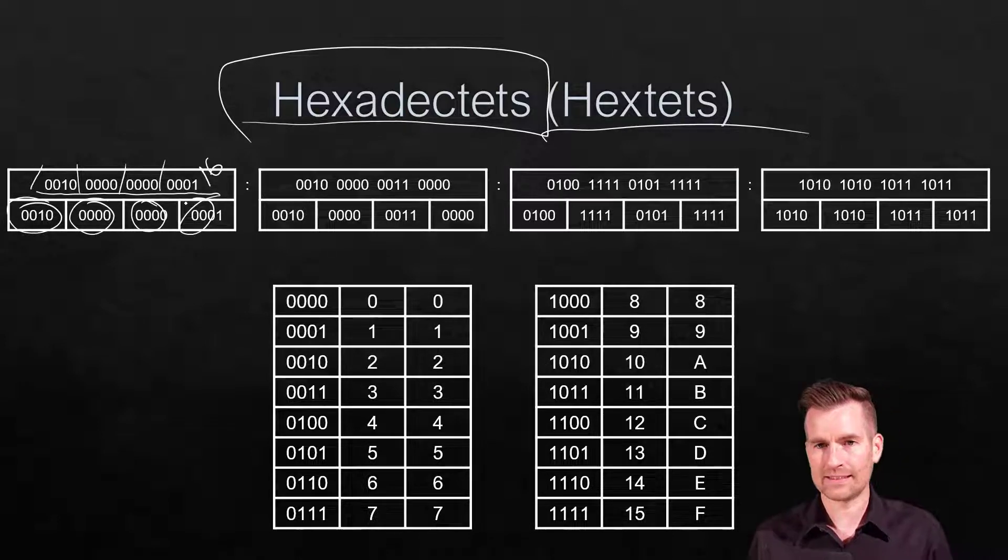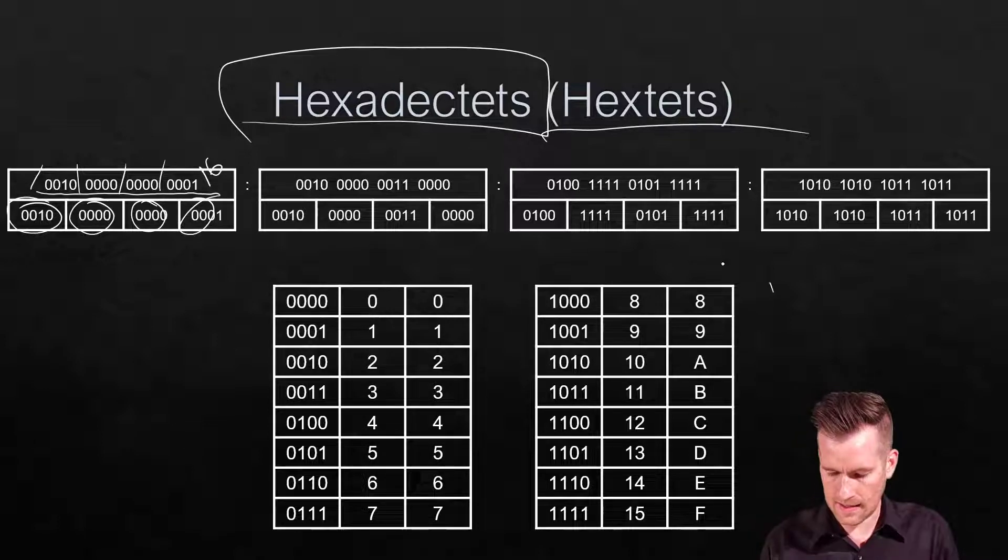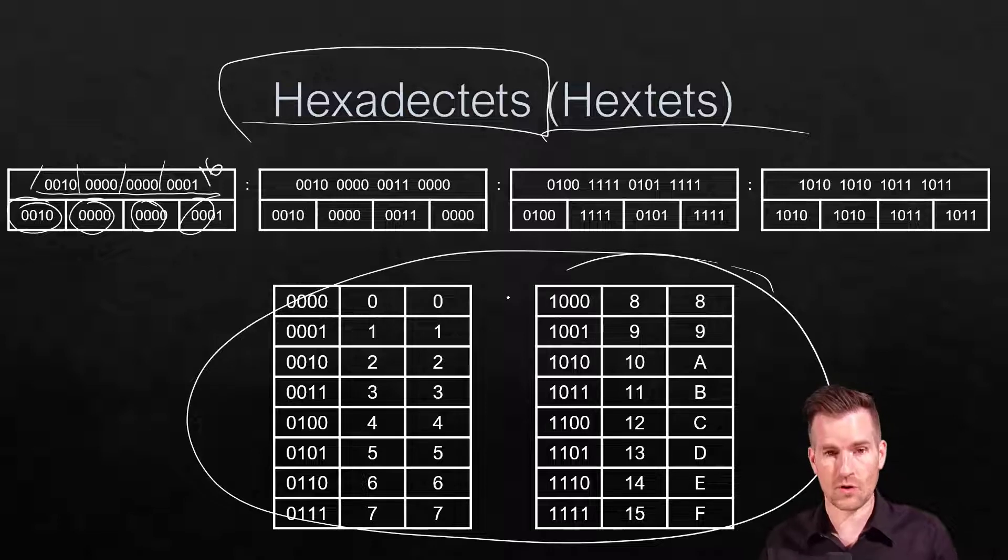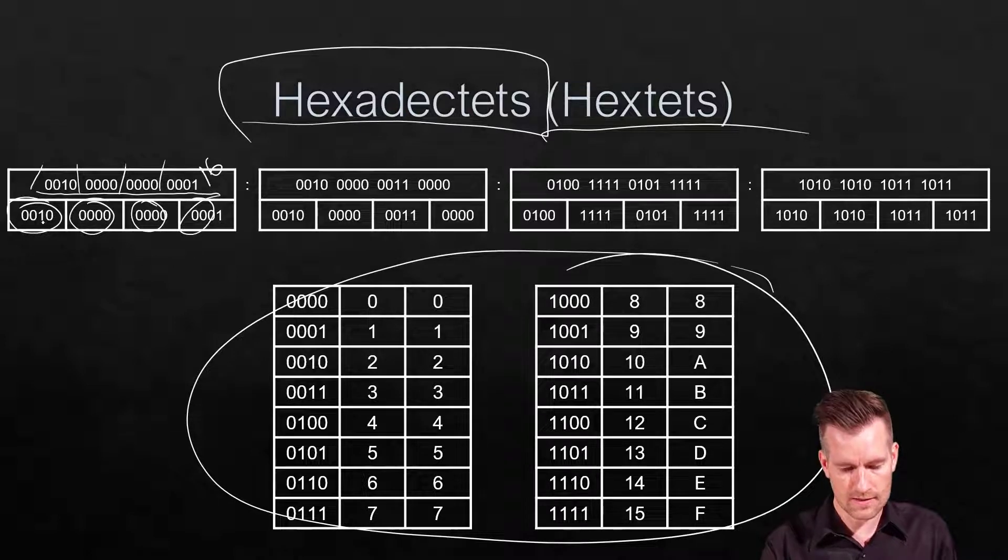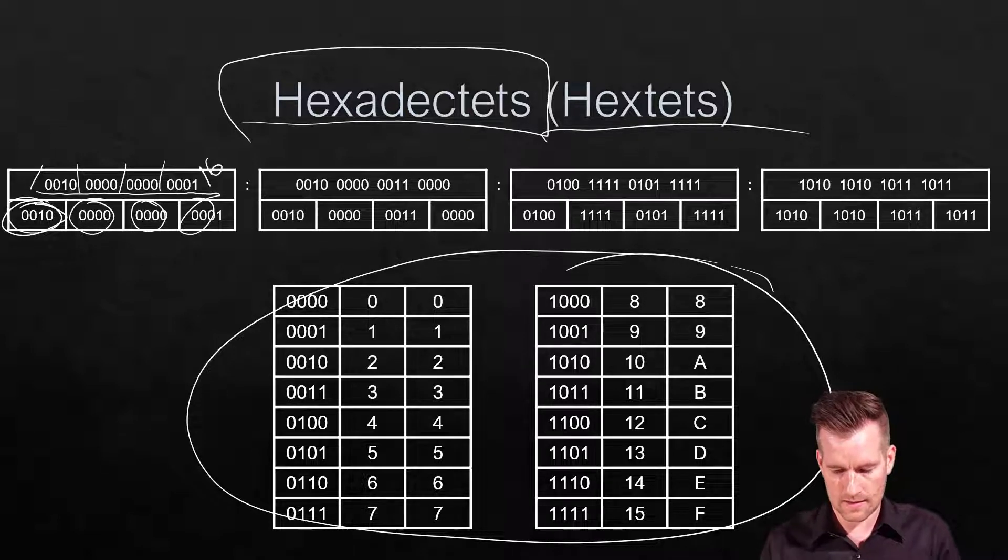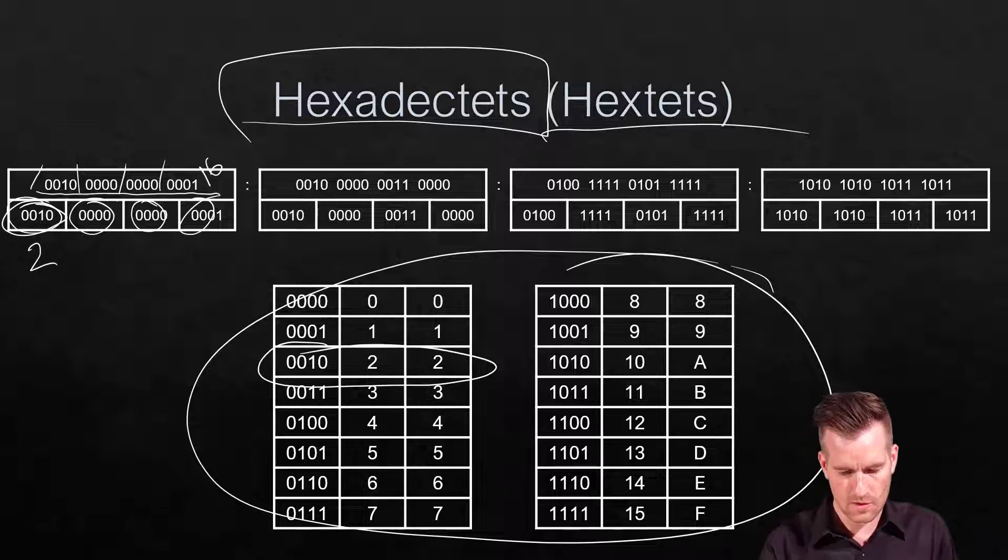Four bits can be represented in hexadecimal. If we translate the binary 0010, that's a 2. Then 0000 is 0, and 0001 is 1.